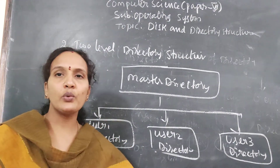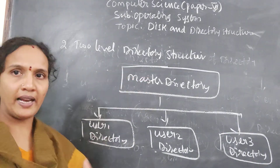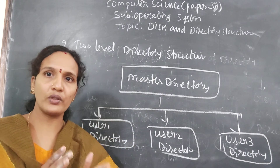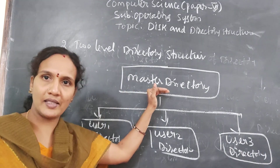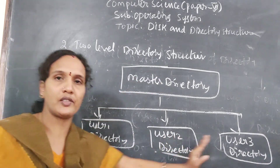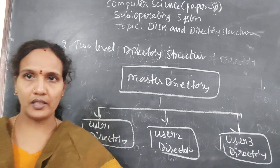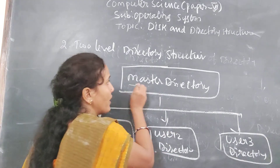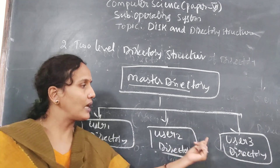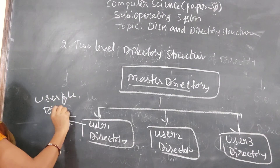Now we will discuss the two level directory structure. In two level, one root directory is there. In single level, only one master directory was there. Here also we have one master directory, but we are extending the level — creating subdirectories inside the main directory. The main directory is called the master directory, and the subdirectories inside are called user file directories.